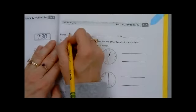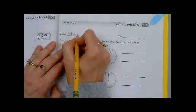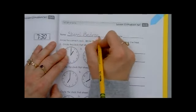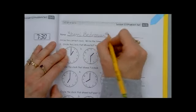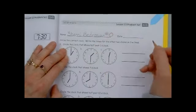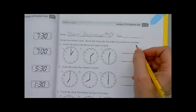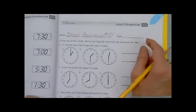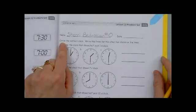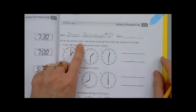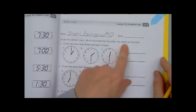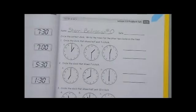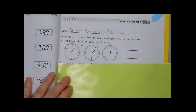Please start by writing your first and last name. Your number symbol and your number. We will write the date when we are together, either in person or online. Now, the directions say to circle the correct clock. Write the times for the other two clocks on the lines. Let's go over this information so that you'll fully understand how to complete each of the problems.